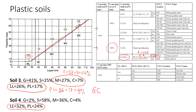For Soil 4: fines are 40 percent, so again we use the top part of the chart. The plasticity index is 32 minus 24 = 8 percent. Plotting liquid limit 32 and plasticity index 8 on the plasticity chart, the point falls below the A-line.